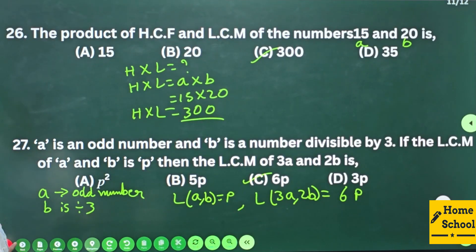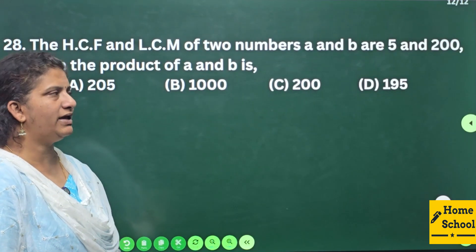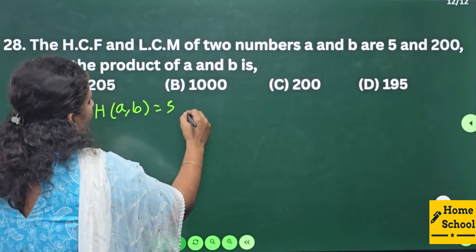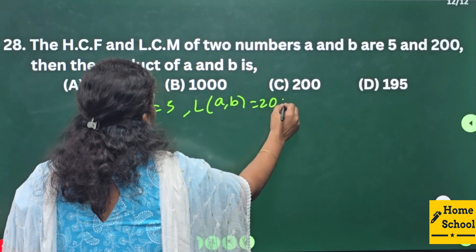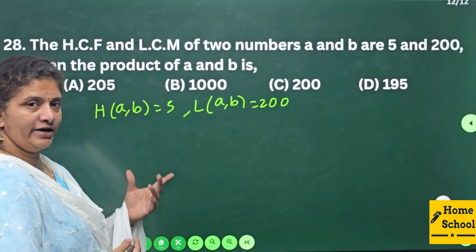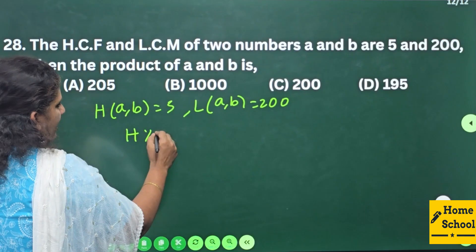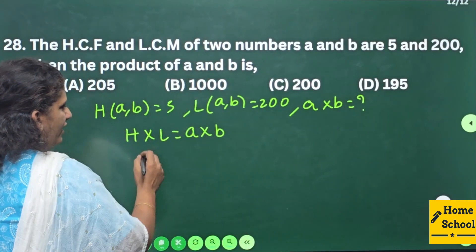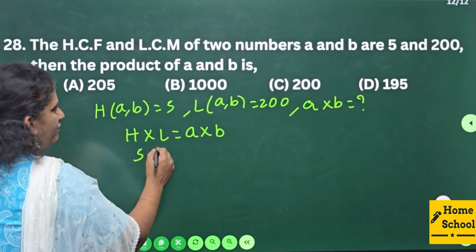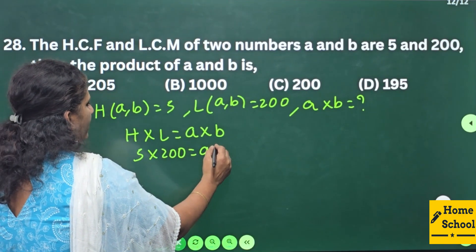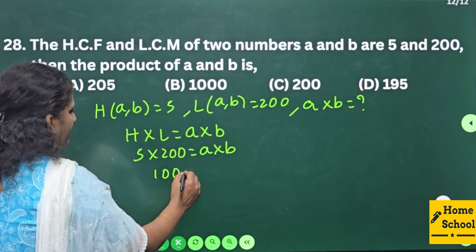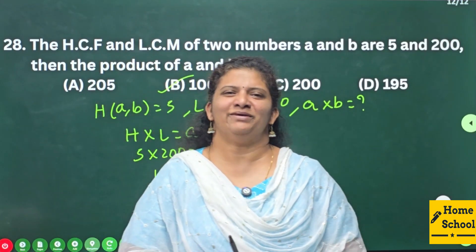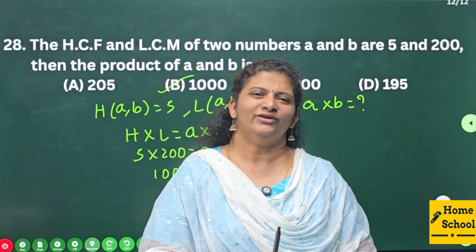Question 28: The HCF and LCM of two numbers a and b are 5 and 200 respectively. Find the product of a and b. We know H × L = a × b, so a × b = 5 × 200 = 1000. The product of a and b is 1000 — option B. With this we complete the LBA of Real Numbers. We'll meet in another session with a new video — keep watching, thank you!